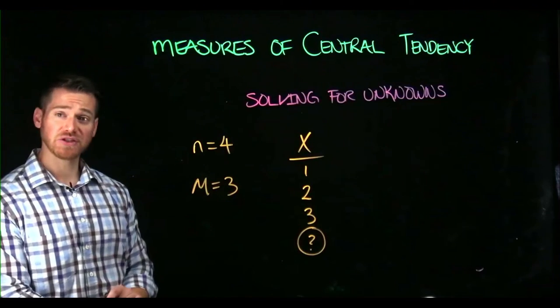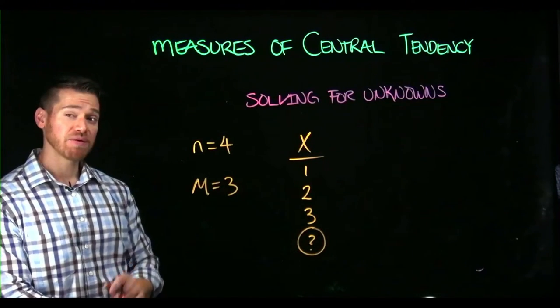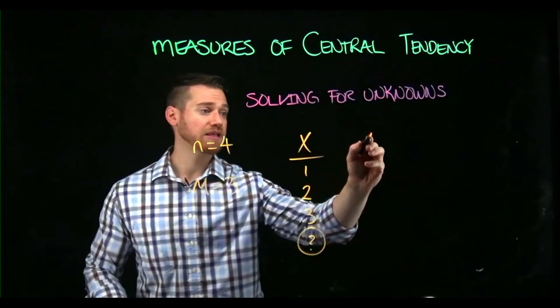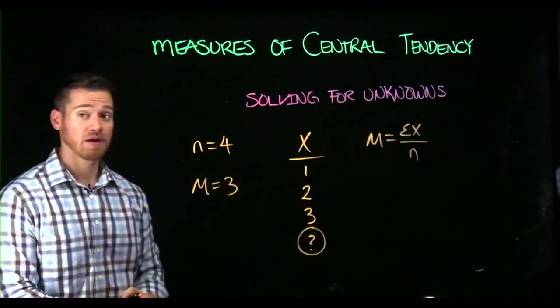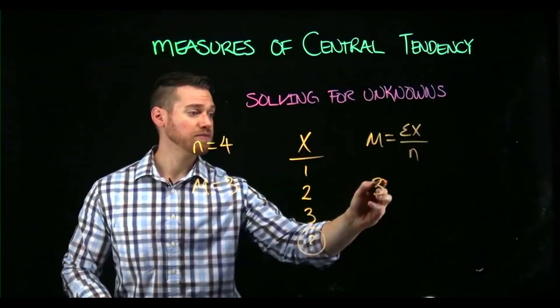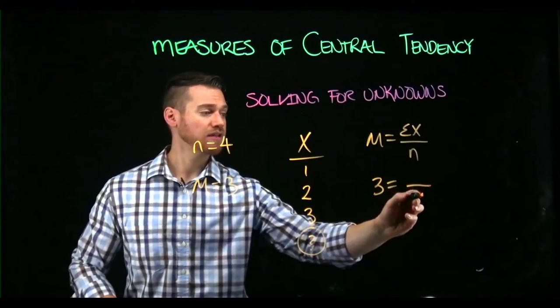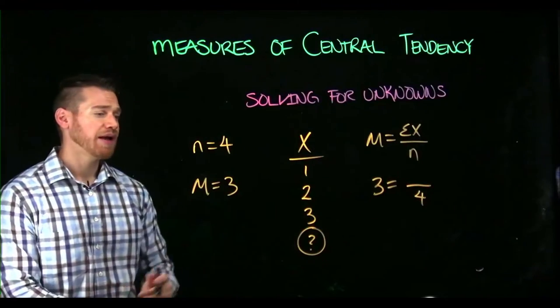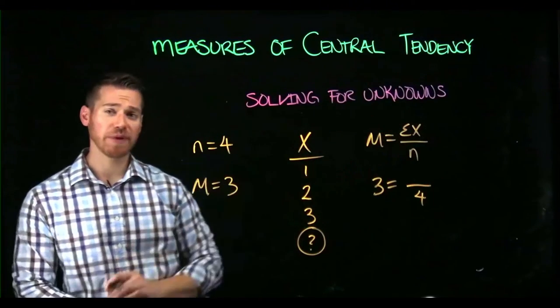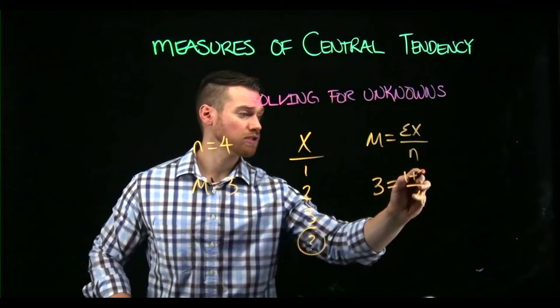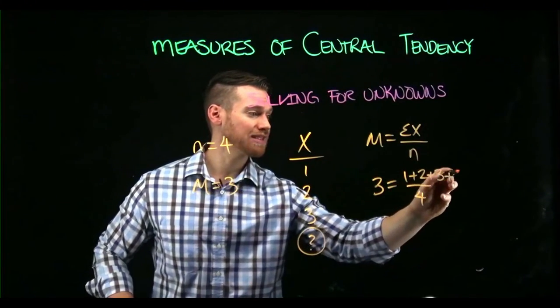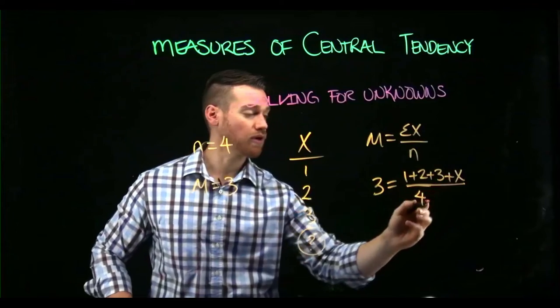Now we have enough information here to do that if we remember that the mean is the sum of scores over n. Here we know the mean is three and we know that sample size is four and we know all but one piece of information that would go into that sigma x statement. We know one plus two plus three plus x over four equals three.